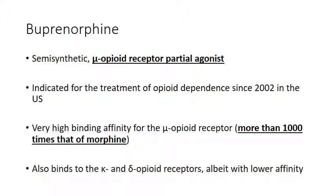Buprenorphine is a semi-synthetic mu-opioid receptor partial agonist with very tight binding affinity for the mu-opioid receptor — about a thousand times more than morphine. This leads to significant blocking effects: if additional opioid is taken on top of buprenorphine, it will not displace buprenorphine from the receptor and therefore will not produce its effect. This has helped increase access to care, as it can be prescribed by any physician with an X-waiver, obtainable by any specialty provider.